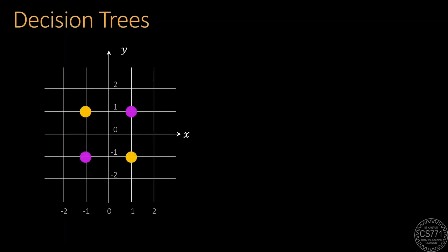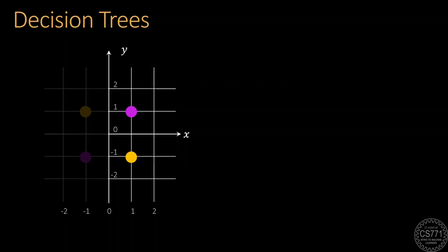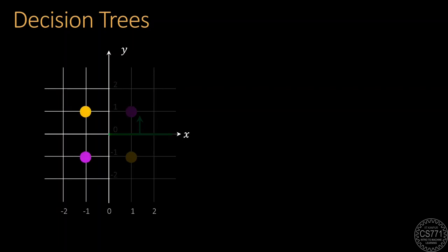Let's start with decision trees and take a simplified version of the binary classification problem that cannot be solved by a single linear model. Notice that if we restrict our attention to a small region of the space, say the right half, then a linear classifier can indeed perfectly classify points in that region. Similarly, there is a classifier that perfectly classifies points in the left half of the space, although this classifier is different from the one that worked for the right half.